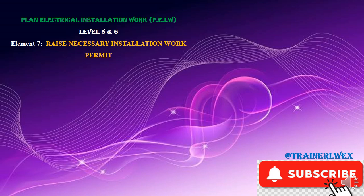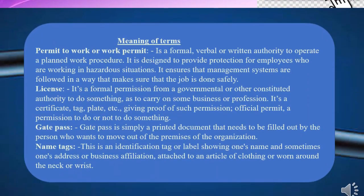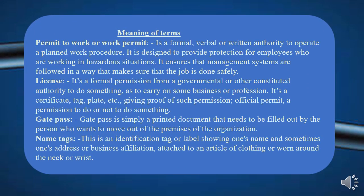Let's get started. The terms we are likely to face — first, understanding what a work permit is and how it differs from a license. A work permit is a formal verbal or written authority to operate a planned work procedure, designed to provide protection for employees working in hazardous situations. It ensures management systems are followed so the job is done safely. A work permit might be regional or within the organization — it's like being allowed to be in and work in that environment.